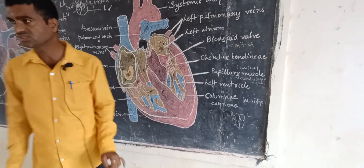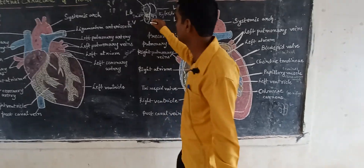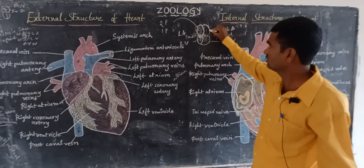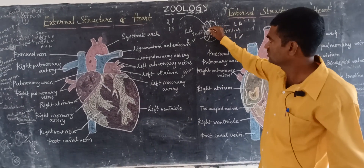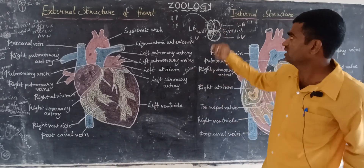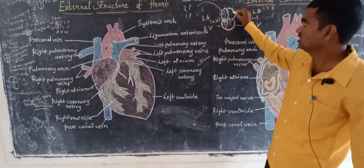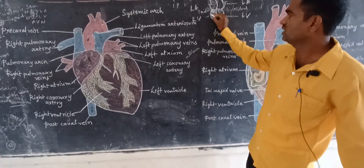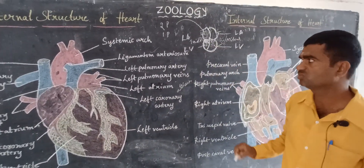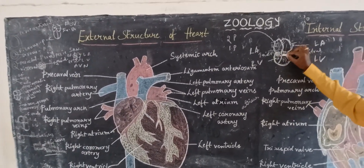The heart is present, and this is the ventricle structure. The right atrium occupies somewhat more area compared to the left atrium. The right ventricle occupies less area, while the left ventricle occupies more area and is somewhat thicker. Muscular ridges are forming inside, which is why it is thicker.